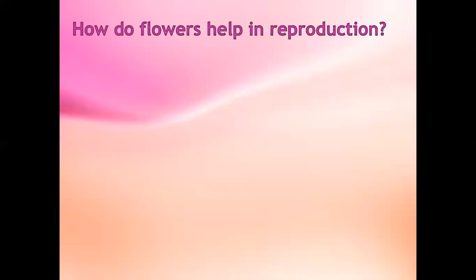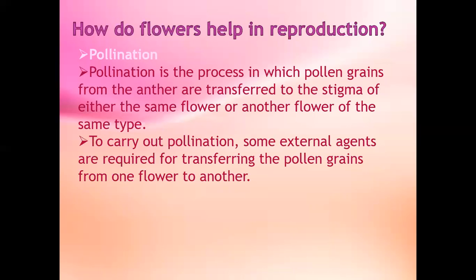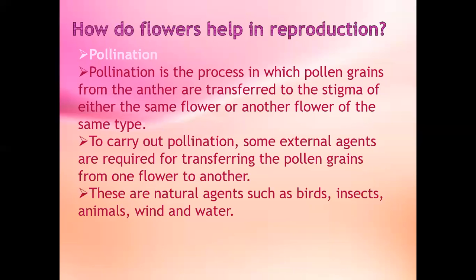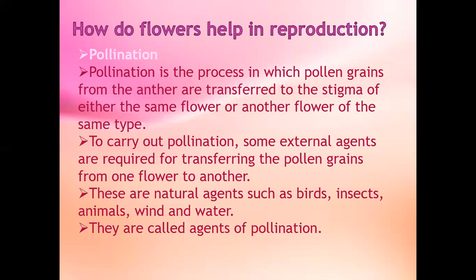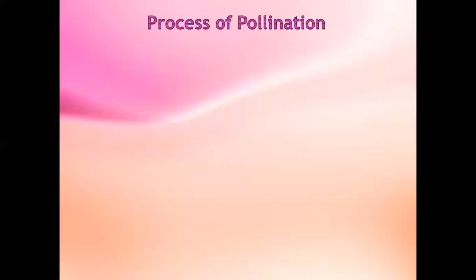How do flowers help in reproduction? Pollination is the process in which pollen grains from the anther are transferred to the stigma of either the same flower or another flower of the same type. To carry out pollination, some external agents are required for transferring the pollen grains. These are natural agents such as birds, insects, animals, wind, and water — they are called agents of pollination. To attract these agents, flowers may be brightly colored and have a fragrance.